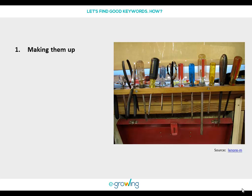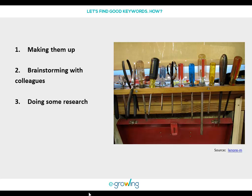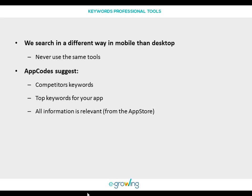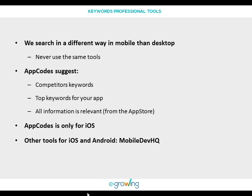Let's see how we can find good keywords. It is recommended to start by making them up — use your imagination and think about the words people may use to look for your app. Then brainstorm with some colleagues, since group creativity always brings surprises. Don't forget to research and benchmark among your competitors to see if they are using interesting keywords you may also use. Use professional tools to find the best keywords, because people search differently on mobile than on desktop. I like AppCodes because it suggests relevant and useful information; however, it is only available for the Apple App Store. If you have Android apps, you can use MobileDevHQ instead.